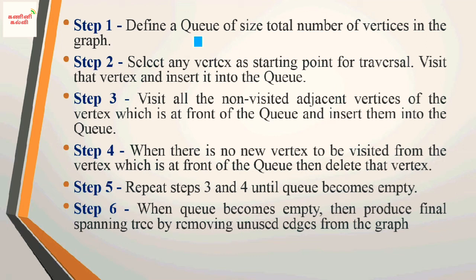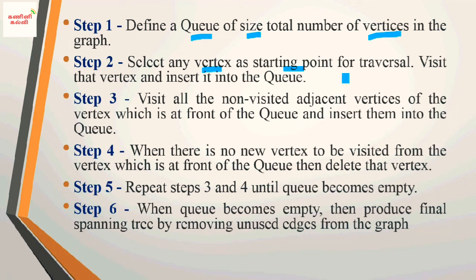These are the steps of the BFS algorithm using a queue data structure. First, define a queue of size equal to the total number of vertices in the graph — for example, if there are 5 vertices, the size is 5. Second, select a starting vertex or source, visit that vertex and insert it into the queue.